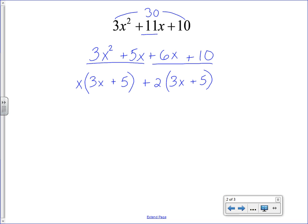Now when we look at the problem altogether that we have here, the first term contains the binomial 3x plus 5. And the second term also contains the binomial 3x plus 5. That 3x plus 5 can come out from each term and get written once in front.